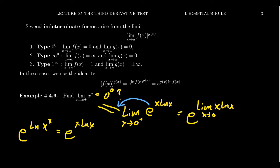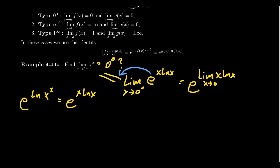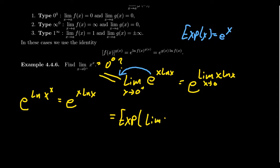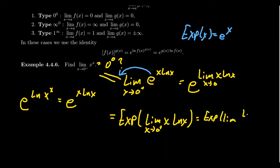Sometimes, because of the superscript notation, it's more desirable to write EXP(x) instead of e to the x, so everything stays in line. So this becomes EXP of the limit as x approaches 0 from the right of x times the natural log of x. Because this has the form 0 times infinity, we need to switch it into a quotient, giving EXP of the limit of the natural log of x over 1 over x as x approaches 0.